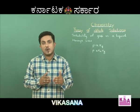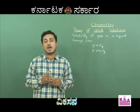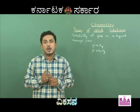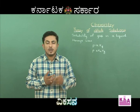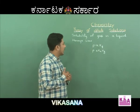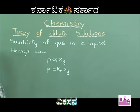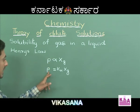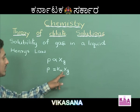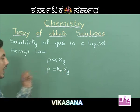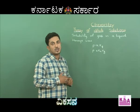The most important factor that influences the solubility of a gas in a liquid is pressure. The relation between pressure and solubility of a gas was given by Henry, which we refer to as Henry's law. According to Henry's law, the partial pressure of a gas above the surface of the liquid is directly proportional to the mole fraction of the gas in the solution. Hence, partial pressure of the gas equals K_H into mole fraction of the gas, where K_H is called Henry's constant.